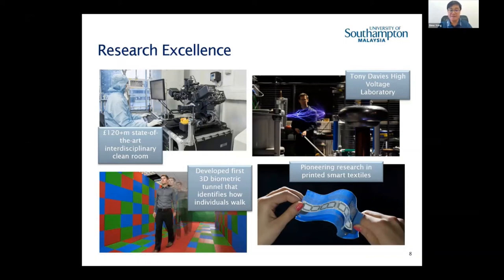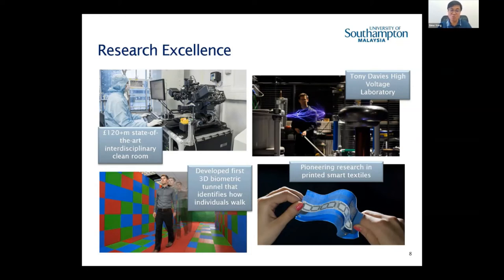We also have significant research associated with artificial intelligence and machine learning. One good example is the 3D biometric tunnel, which identifies how a person walks — extracting unique features from an individual's gait, like a fingerprint of their walking style. This means CCTV can be used to identify a particular person from the way they walk. Next, I'd like to invite my colleague Dr. Lin Chi Sen, who specializes in power engineering, to talk about power-engineering research at Southampton.